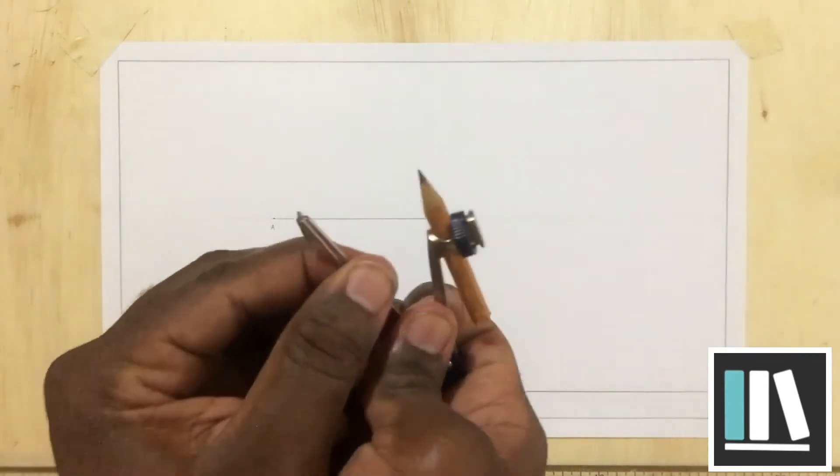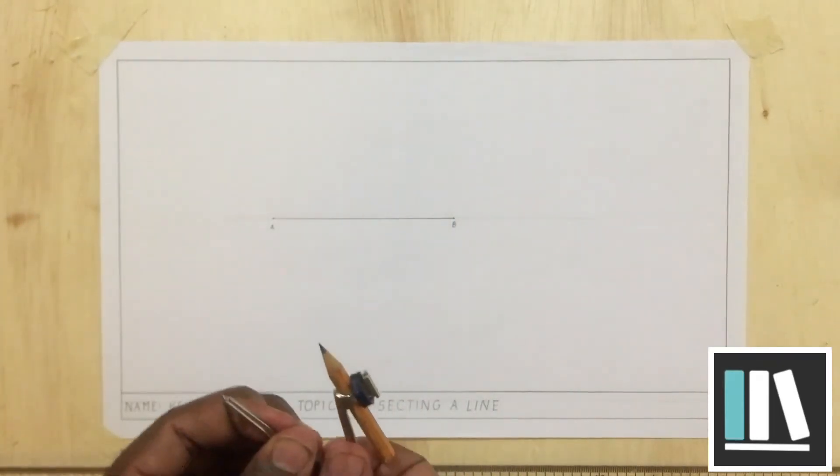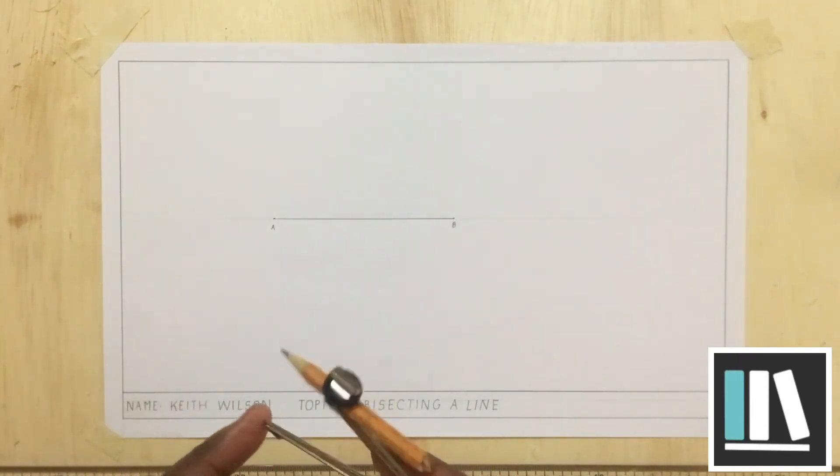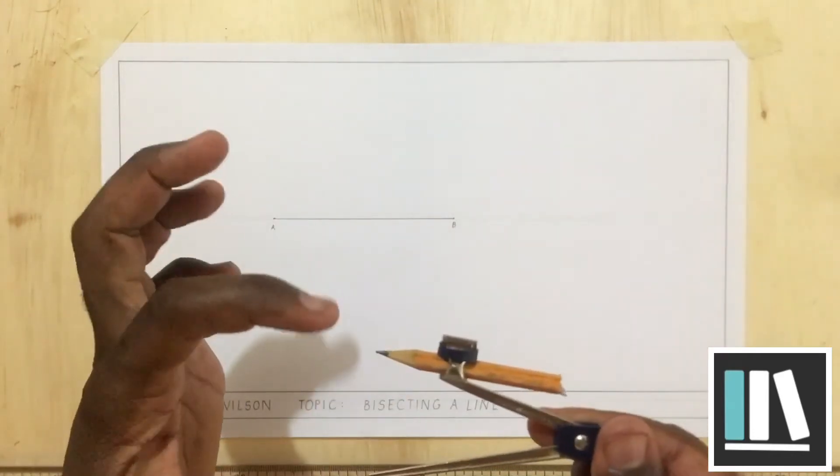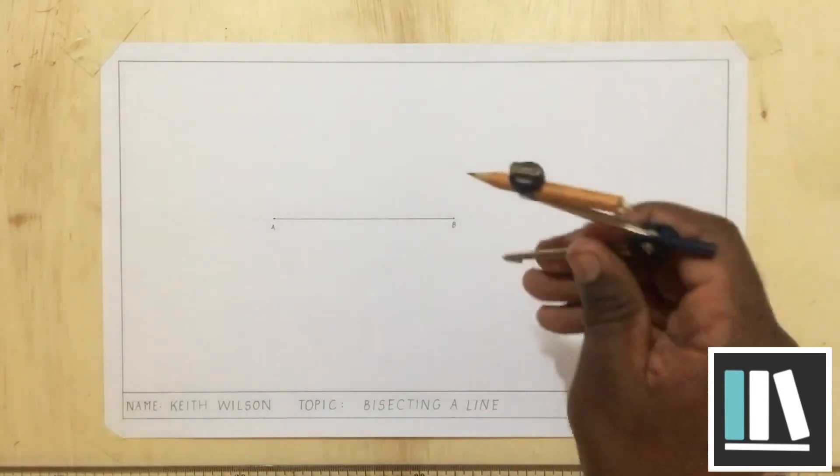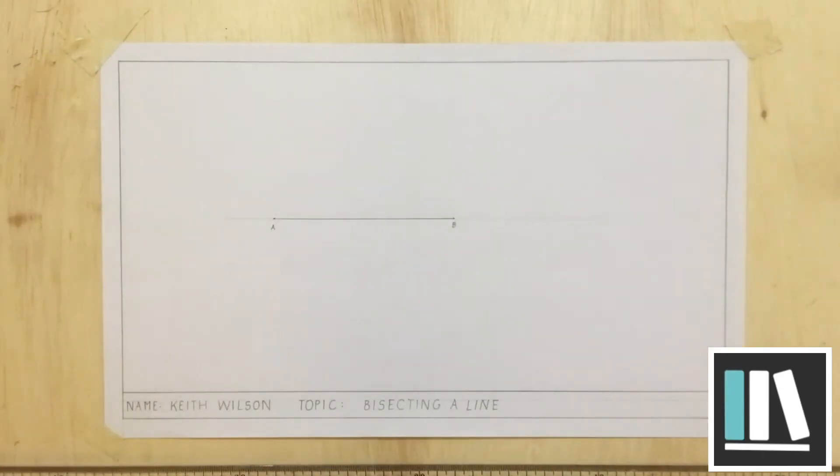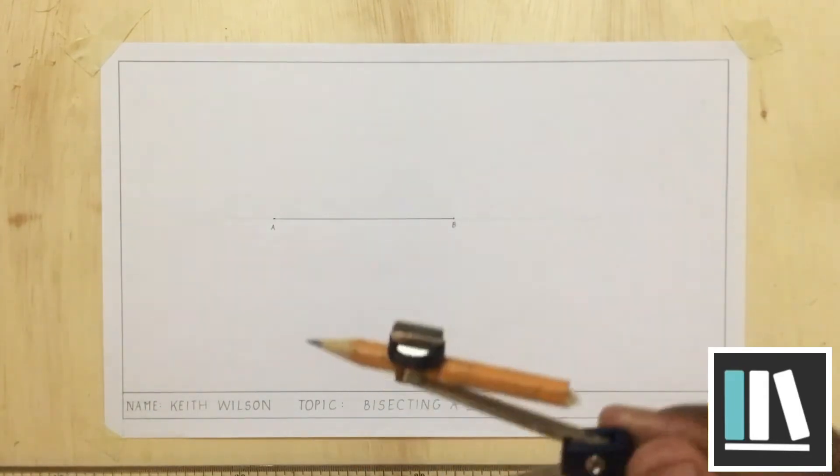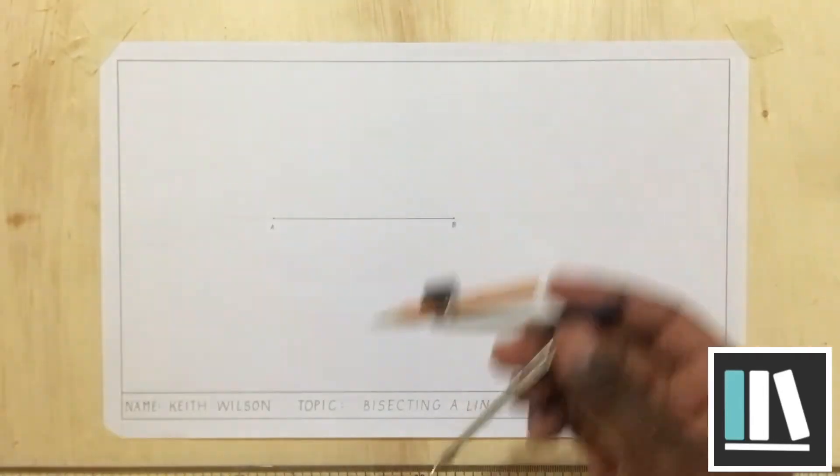Going forward now, you are going to open your compass to a convenient radius. And by radius, I mean the distance between the pencil point and the compass point. All circles or all arcs have a radius, which will be determined by the distance between the pencil point and the compass point. You are going to open your compass to a length that is equivalent to more than half the length of the line. This will go by estimation.